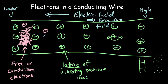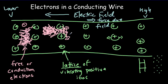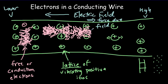What now happens with the motion of the electrons is that it still has this kind of random pattern, but because of that general force to the right, it will slowly migrate across the wire. Typically, this migration will only be at, say, a millimeter per second — a very slow migration. And we call that the electron drift.